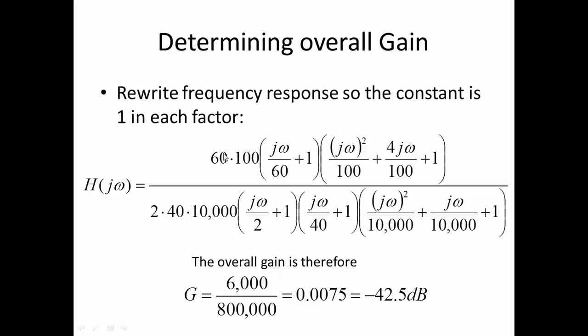The overall gain is the ratio of these numbers out front. So in the numerator, I have 6,000. In the denominator, I have 800,000. The ratio is 0.0075, which converted to decibels is minus 42.5 dB.